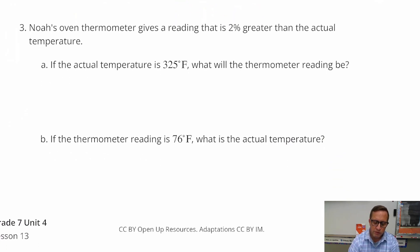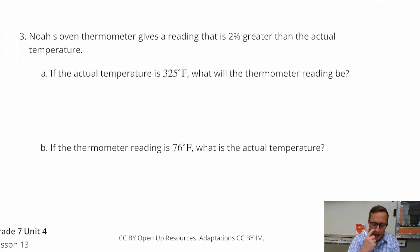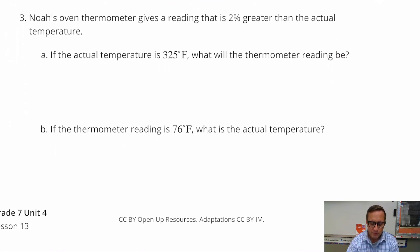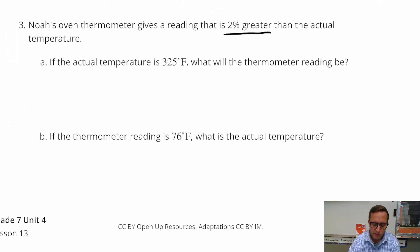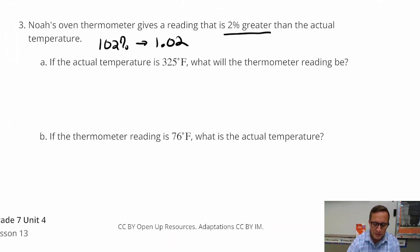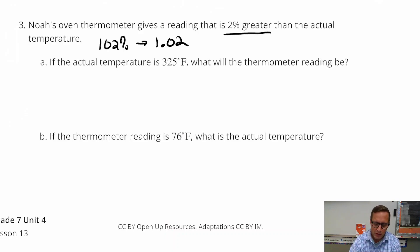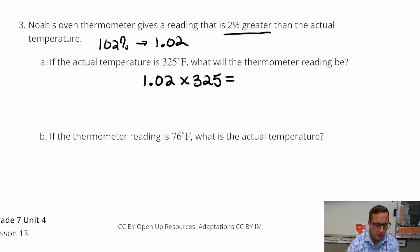Number three: an oven thermometer gives a reading that is 2% greater than the actual temperature. If the actual temperature is 325 degrees, what will the thermometer reading be? This is describing a percent of increase — 100% plus 2% gives 102%, which comes out to 1.02. So 1.02 times 325 will equal the new amount with the change included.